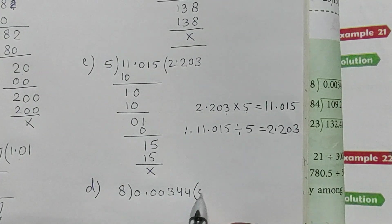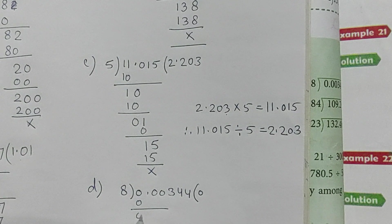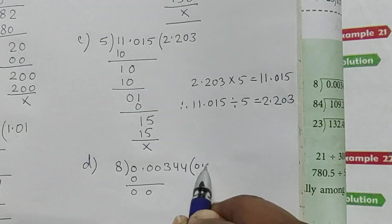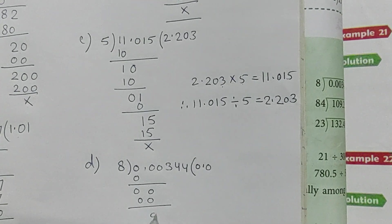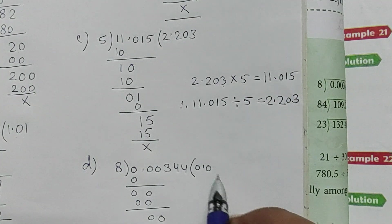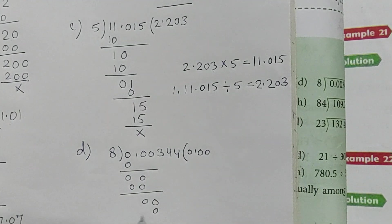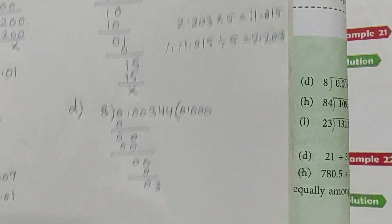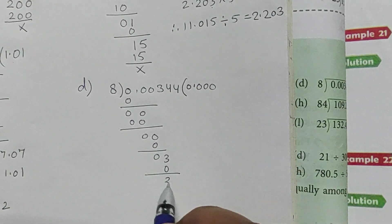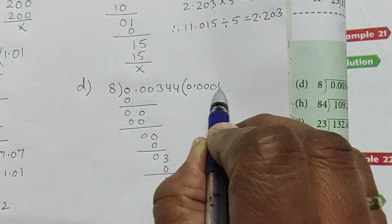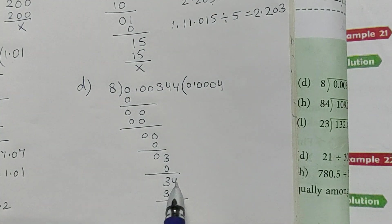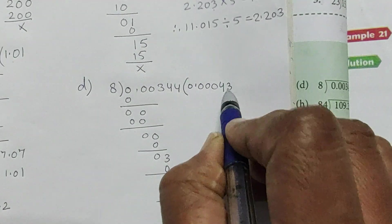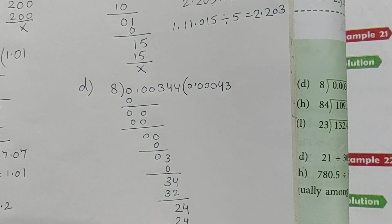So here we have 0. First we'll do this 0, then 0. Point here, we'll put the point. Bring down this 0, it will only divide by 0. Again 0, 0, 0. Bring down this 0. Again we'll do 0. Then bring down 3. 3 is smaller than 8. So 0. Bring down 4. 8 into 4 is 32. 34 minus 32 is 2. 24. 8 into 3 is 24. The division is complete.